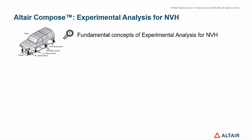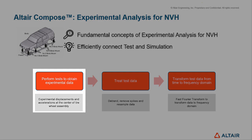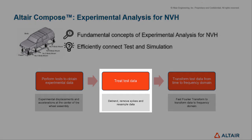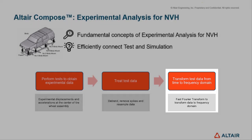This video explains fundamental concepts of experimental analysis for NVH and how to efficiently connect tests and simulation. When we talk about experimental analysis, there are some main steps that help build the bridge between test and simulation: perform tests to obtain experimental data and displacements and accelerations at the center of the tire-wheel assembly, then treat test data by removing spurious information such as trends and spikes, and finally transform test data from time to frequency domain using the fast Fourier transform algorithm.